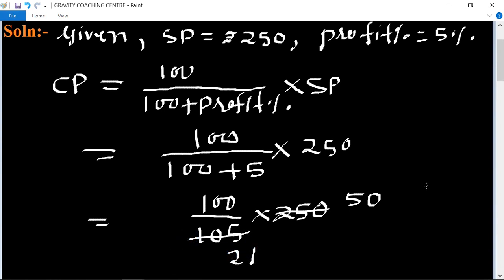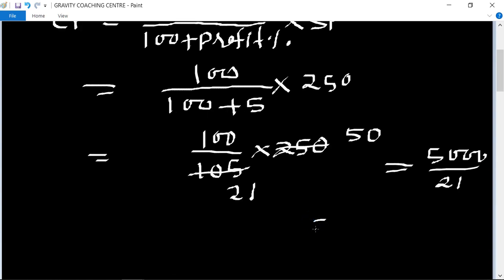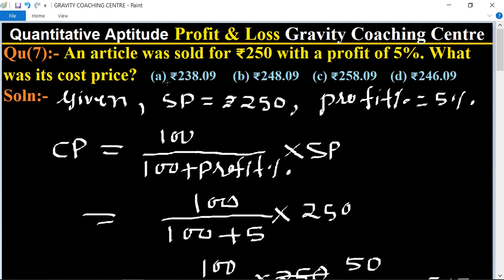After dividing, we get the result 238.09, two hundred thirty-eight point zero nine. So option A is the correct answer.